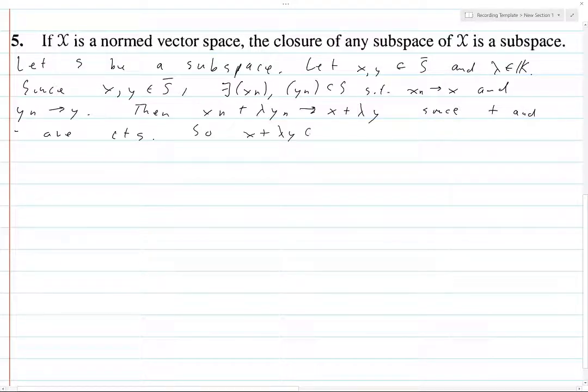So, x plus lambda y is in S closure, since each x_n plus lambda y_n is in S.